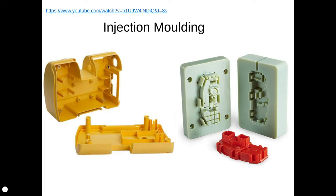Injection moulding is also really useful for plastic shells of products that are screwed together. You can see here on the left-hand side the pre-moulded fixings and support brackets — the support webbing and the already moulded screw fittings. That just allows parts to be disassembled for maintenance or repair really easily.